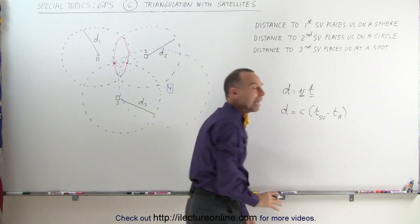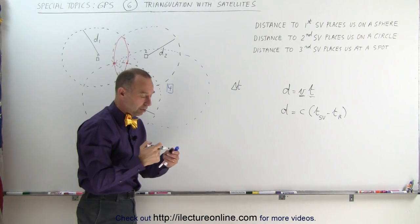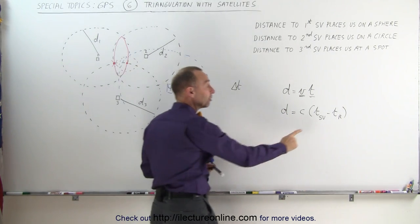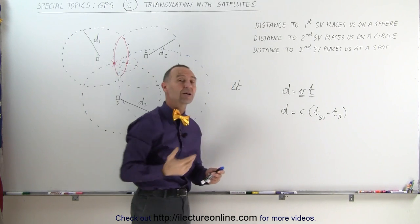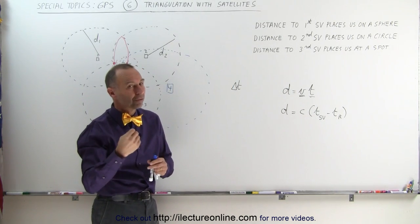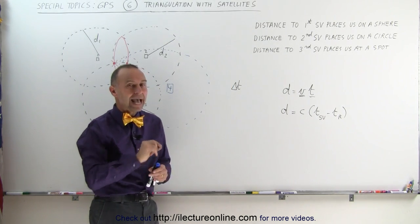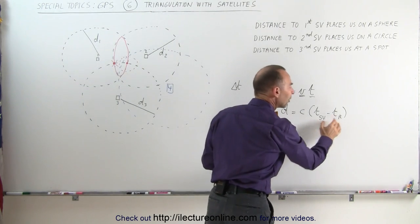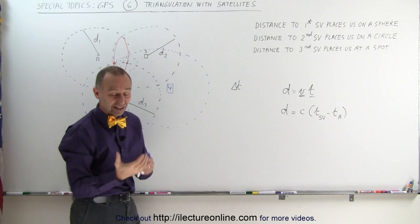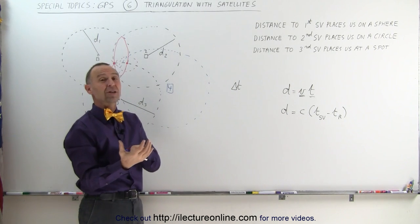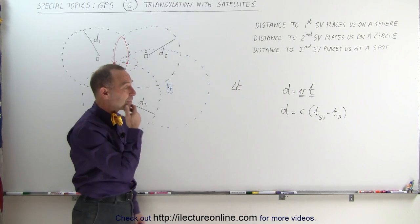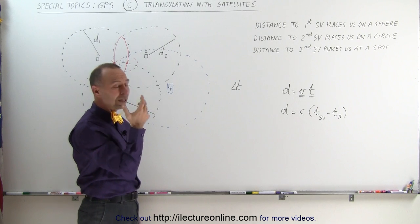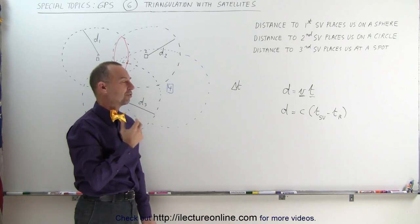That difference in time has to be absolutely accurate. Now we already know that the space vehicles have atomic clocks on board, and their time is very, very accurate. May not be absolutely perfect, but it's pretty close to being perfect. The problem is our receivers don't have those atomic clocks. They tend to be small, and we can't put an atomic clock in them. They're very expensive.